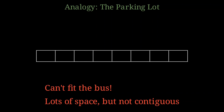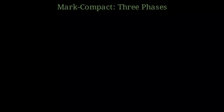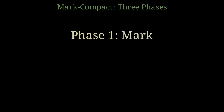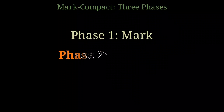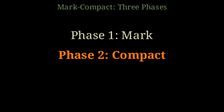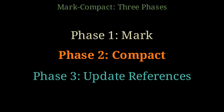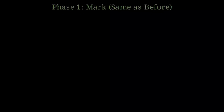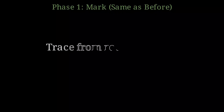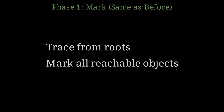This is exactly what happens with memory fragmentation. Mark and Compact solves this problem by adding a new phase to the collection process. Instead of two phases, we now have three. Phase one is Mark — this works exactly like Mark and Sweep. Phase two is Compact — this is the new step that eliminates fragmentation. Phase three is Update References — after moving objects, we must update all the pointers. The Mark phase is identical to what we've already seen: the collector traces from the roots, follows all references, and marks every reachable object as live.